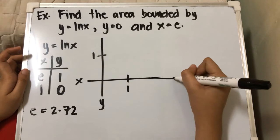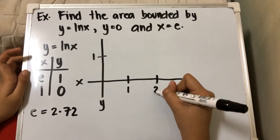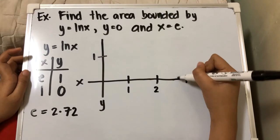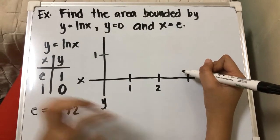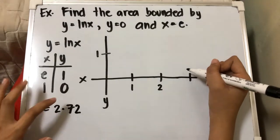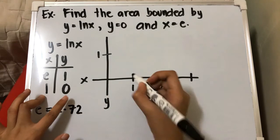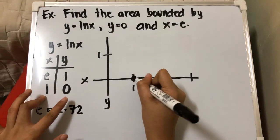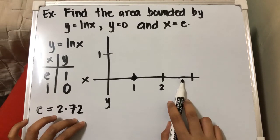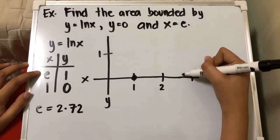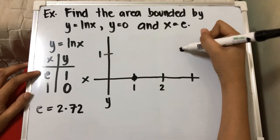We need to extend the axis to 3, so we have 2 and 3. 2.72 is somewhere in between. Plotting this to our Cartesian plane, we have y equals 0 at x equals 1, so that's somewhere here. And for 2.72 on our x-axis, our y is 1, so it's basically here.